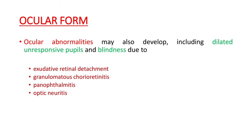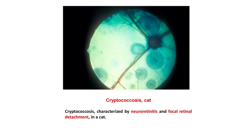The ocular form: ocular abnormalities may also develop, including dilated and unresponsive pupils and blindness due to exudative retinal detachment, granulomatous chorioretinitis, panophthalmitis, and optic neuritis. This picture shows a cryptococcosis condition in cats characterized by neuroretinitis and focal retinal detachment.